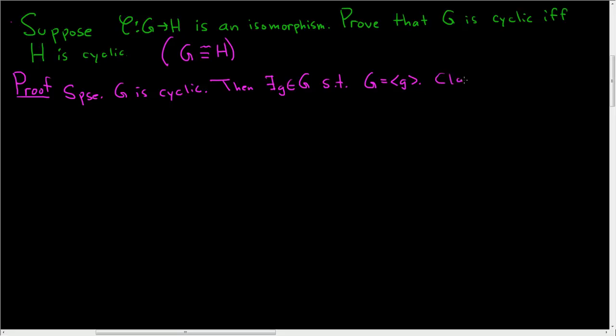So the natural choice is to look at the element phi of little g. So claim that H is generated by the element phi of little g. So all we have to do is take an arbitrary element of H and show it's in this set, and we're done. Because this set here is obviously a subset of H, so we only have to show that H is actually contained in the cyclic group generated by phi of little g.